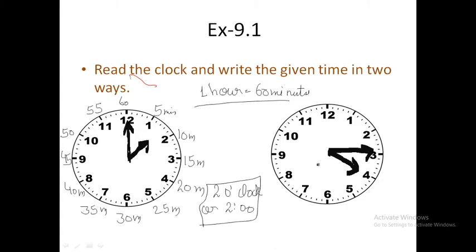Next, when the short hand is at 4 and the long hand is at 3, the time is 4:15, or 4 hour 15 minutes, or quarter past 4.